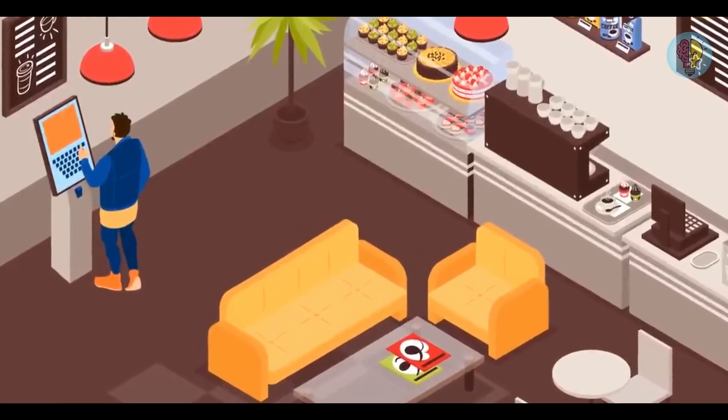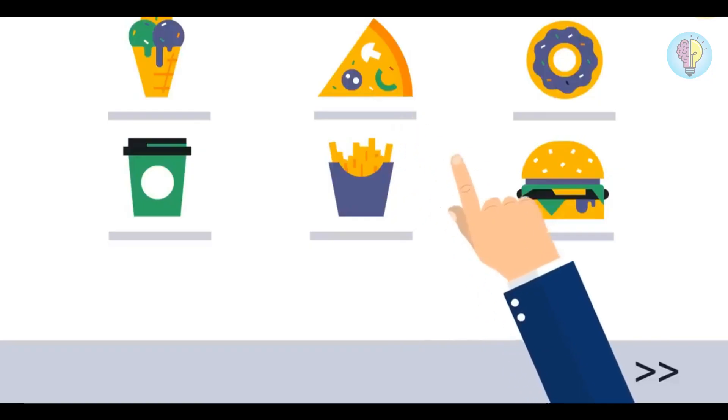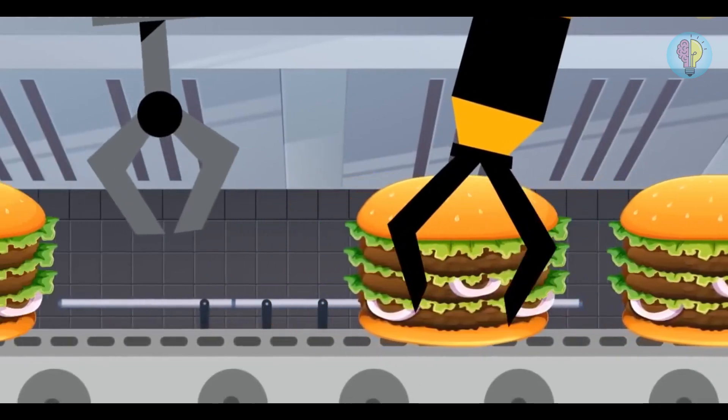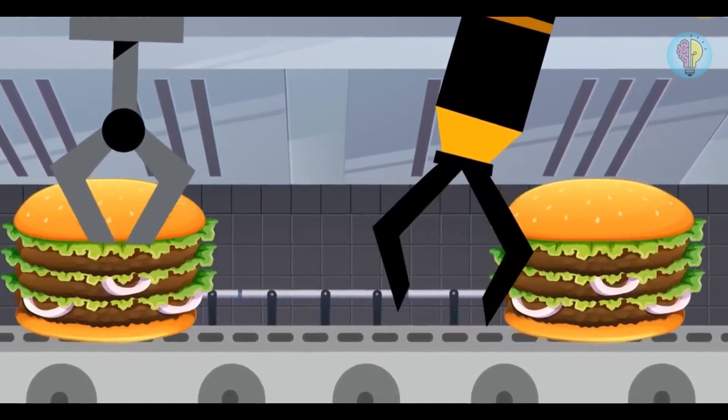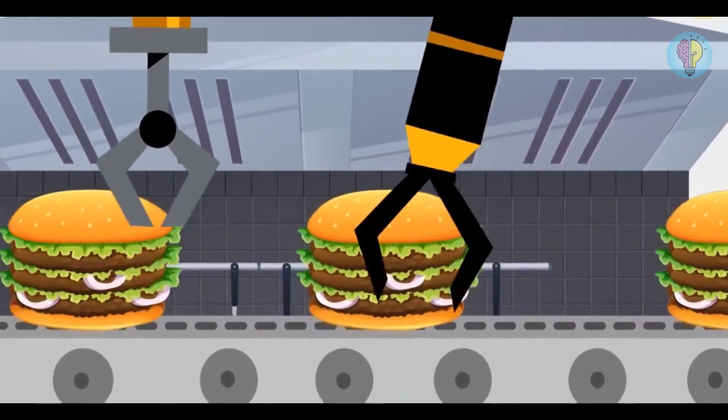Now imagine going to a fast food joint and not seeing a single human in front of you. You place your order with a digital cashier after customizing it. You pay and watch the robots at work. You'll likely see mechanical arms lifting the deep fryer and preparing a burger in front of you.